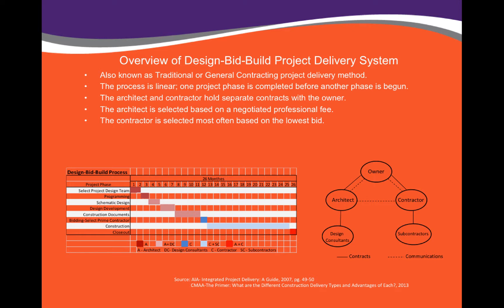An overview of the Design-Bid-Build project delivery system. This is also known as the traditional or general contracting project delivery method. This process is linear — one project phase is completed before another phase has begun. In the diagram at the bottom left, you can see that first the project design team is selected, then there's a programming phase, then schematic design, followed by design development, construction documents, and then bidding and selecting the prime contractor. Afterwards construction starts, so none of this is allowed to overlap. The architect and contractor hold separate contracts with the owner, as shown in the bottom right diagram. The architect is typically selected on a negotiated professional fee, and the contractor is selected most often based on the lowest bid.